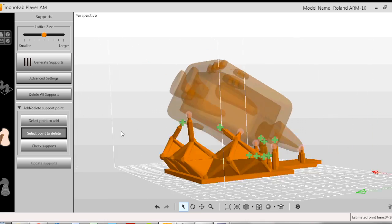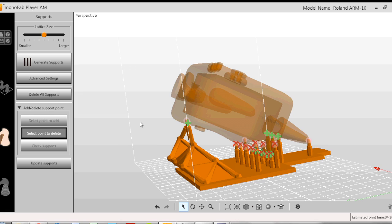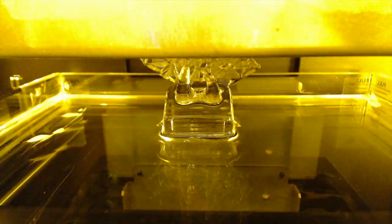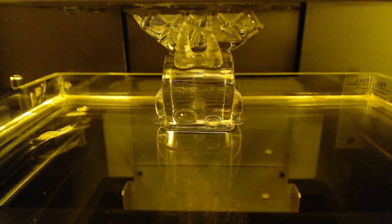You want enough to support the object and then also not too hard to remove afterwards. If you have too many it's just going to be a nightmare. Now we're printing, you can see the blue flashes of light, that's the projector, curing the resin and turning it to a solid.